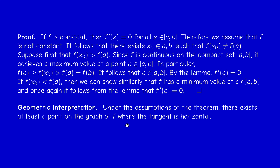The geometric interpretation of Rolle's Theorem is that if we have a function that is continuous on the closed interval [A,B], differentiable inside, and F(A) = F(B), then there is at least one point on the graph where the tangent is horizontal. You can draw a picture if you like. This concludes the first result of this chapter.